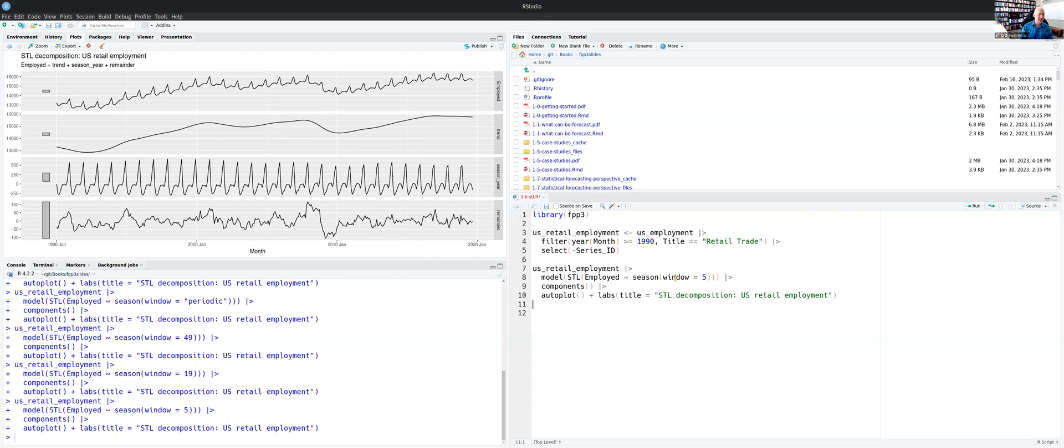So the change in the seasonal pattern can be controlled with that window argument. Let's set it back to something a little more moderate like that.